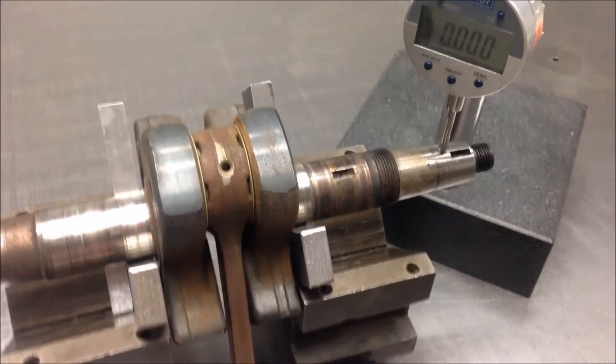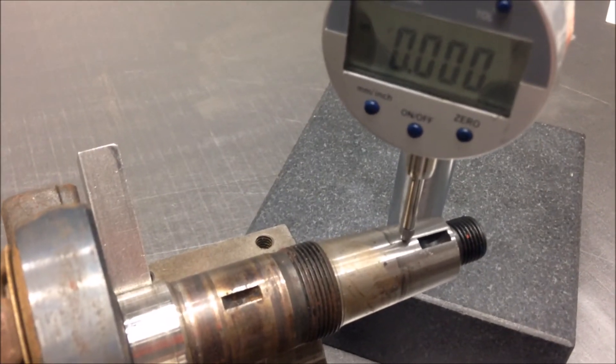Next, you'll want to check the other side. Again, properly set your dial indicator and rotate it one full revolution.